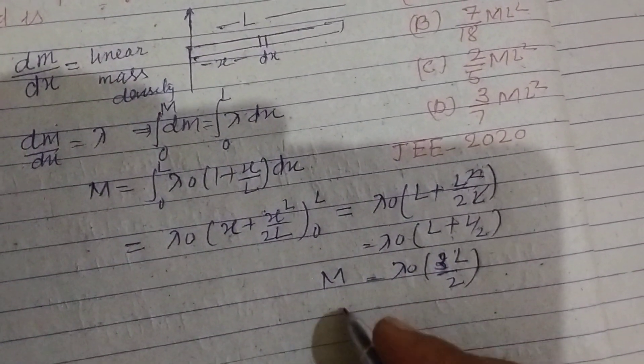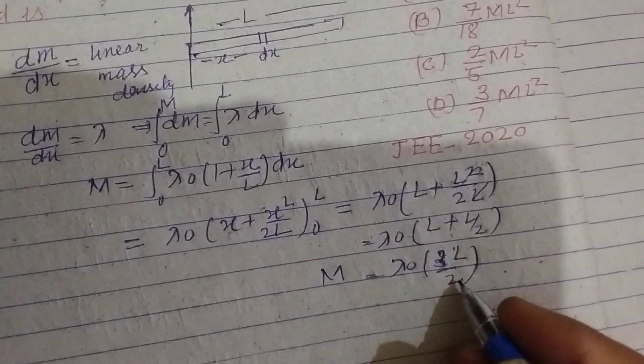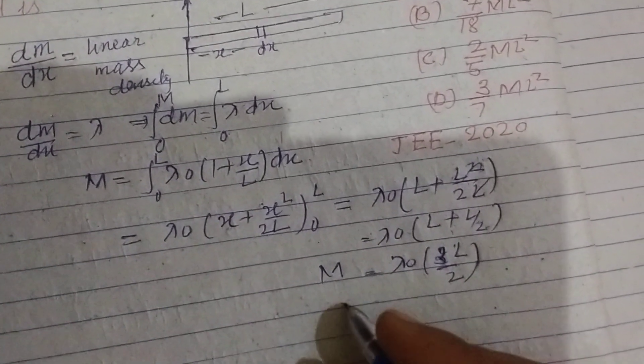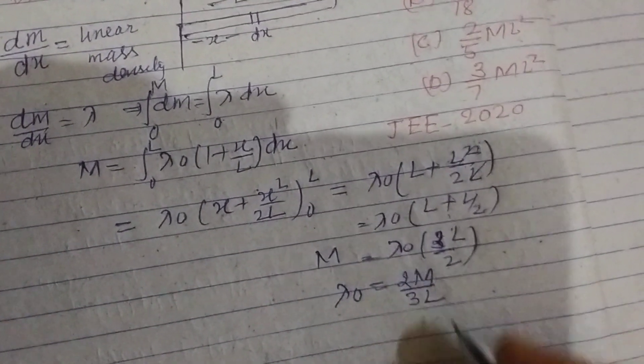So the mass is M equal to lambda naught times 3L by 2. Or we get this in terms of lambda naught, 2M upon 3L.